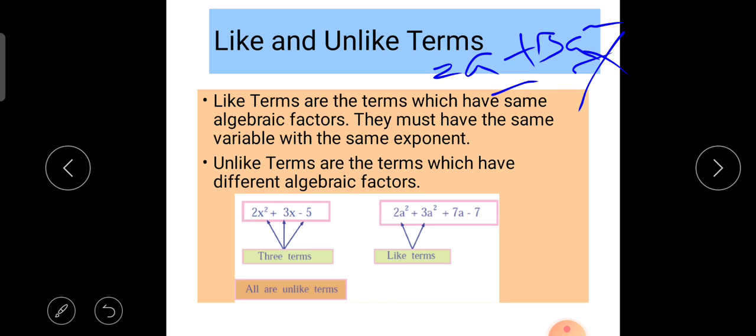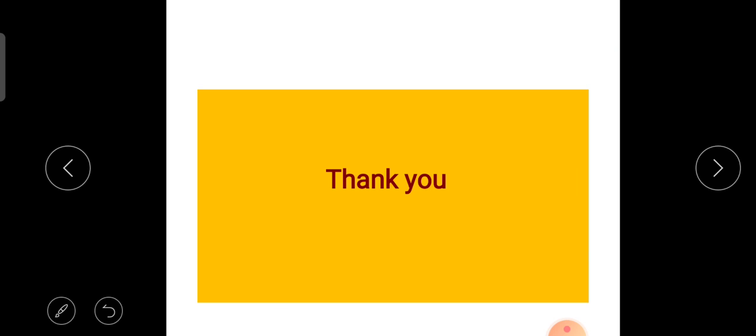Unlike terms are the terms which have different algebraic factors. For example, here you can see they are unlike terms because one has power 2 and 3x has power 1. And like terms: 2a² plus 3a². Both are like terms because both have the algebra a and the same power. I hope you all understand this. Thank you.